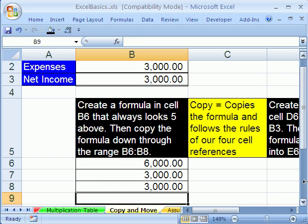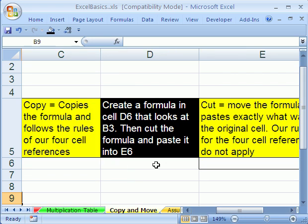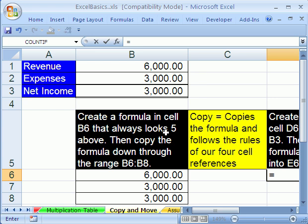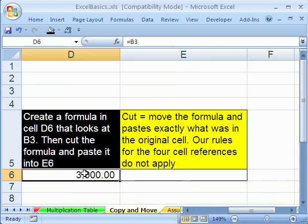I'm going to hit Enter. Now, I'm going to come over here and try something slightly different. I'm going to say equals, and then I'm going to click up here on our net income number 3,000. And then I'm going to hit Tab. Click back in this cell. I'm going to hit F2. Notice it says B3.